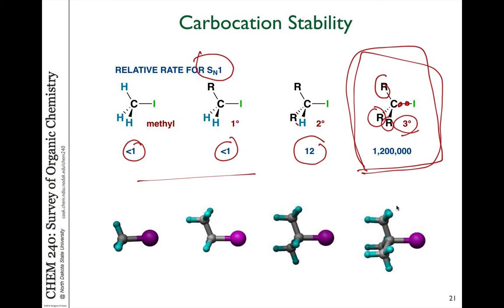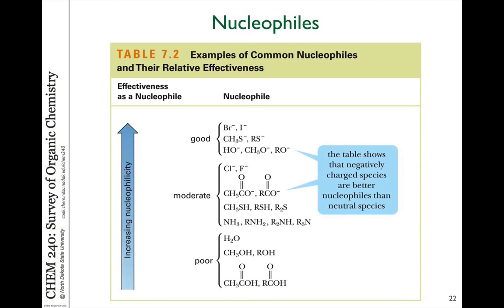It is possible for SN1 reactions to occur on a secondary halide, but it's significantly slower than a tertiary halide. For an SN2 reaction, it's slow if it's crowded. For an SN1 reaction, it's fast if it's more substituted because it stabilizes the carbocation.